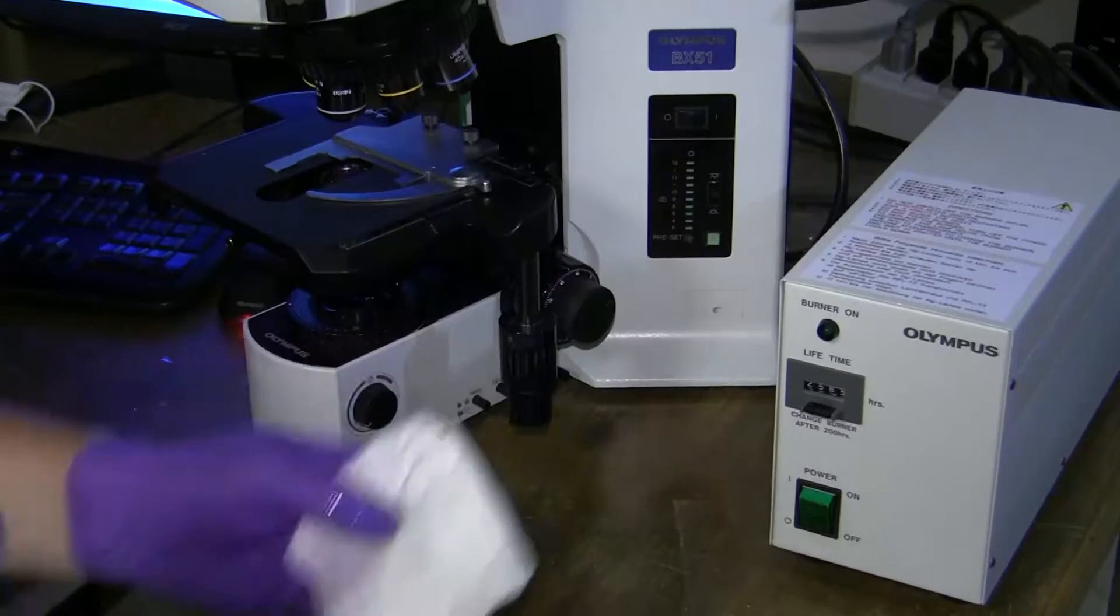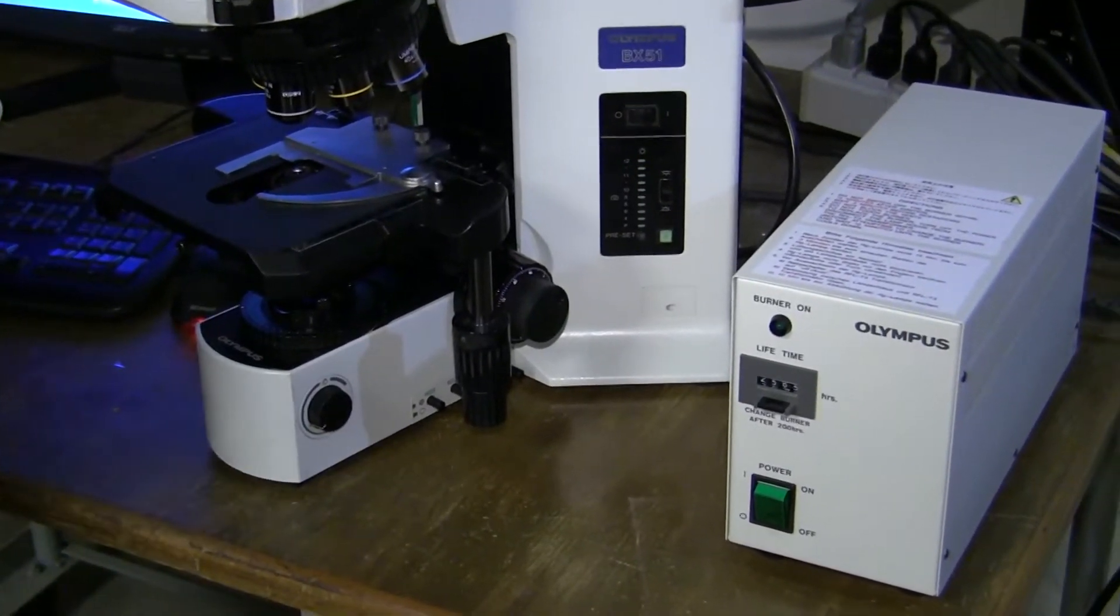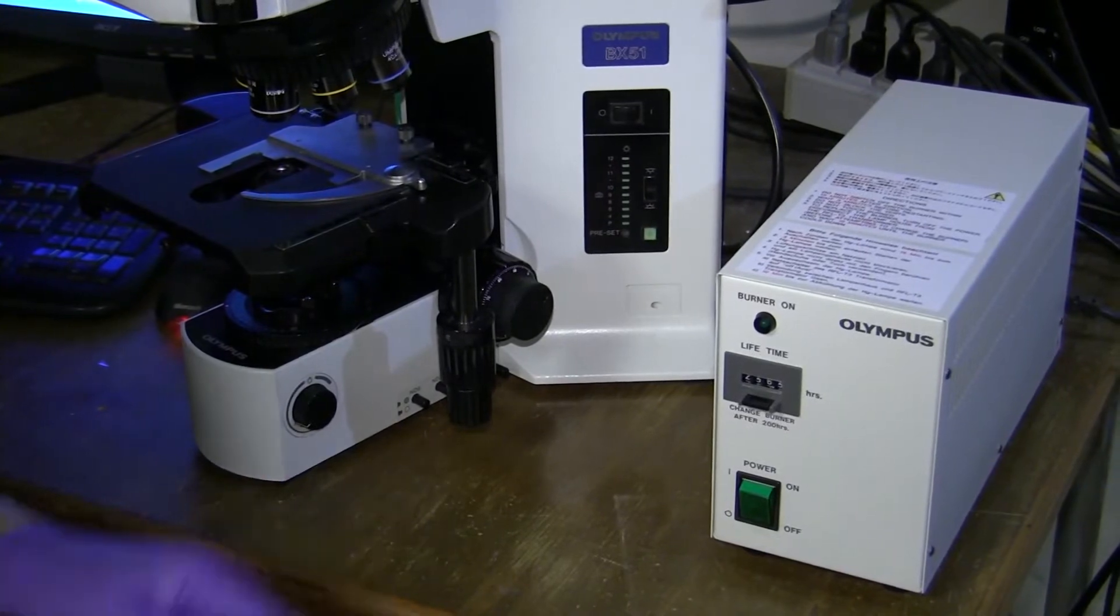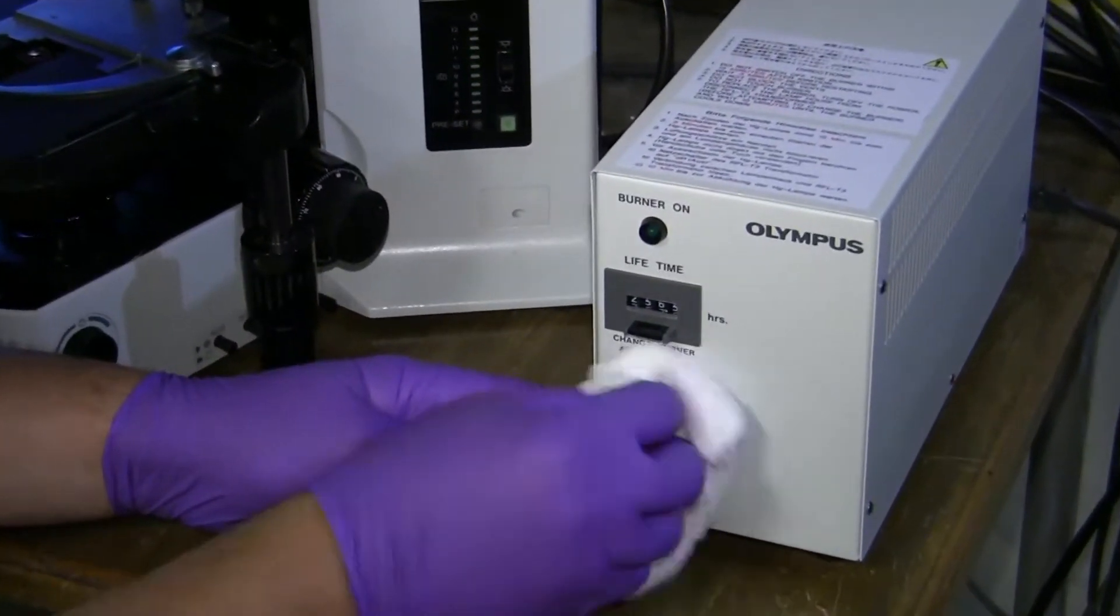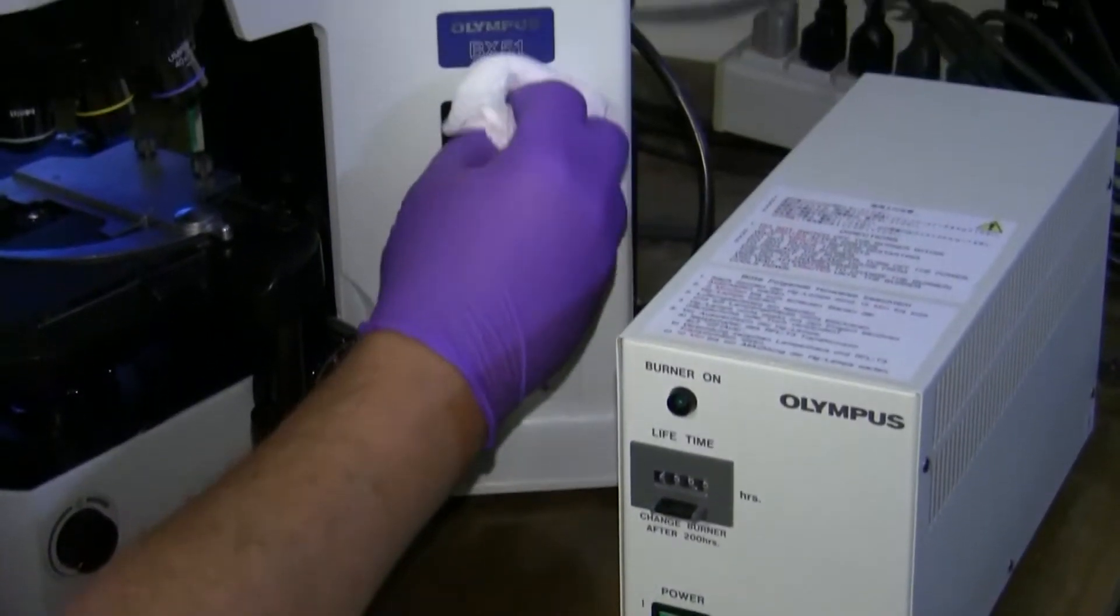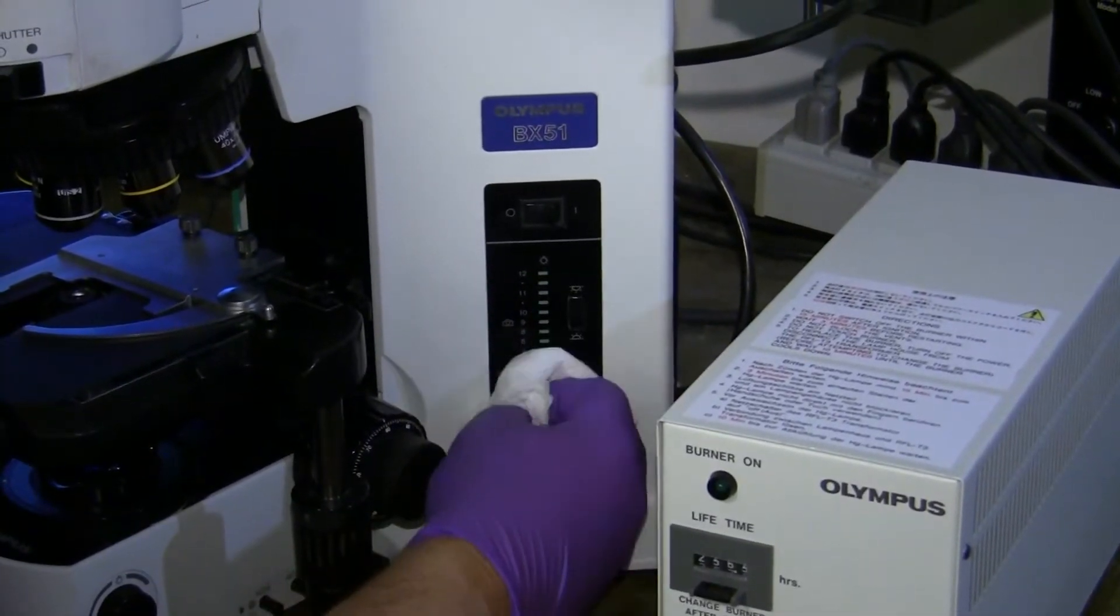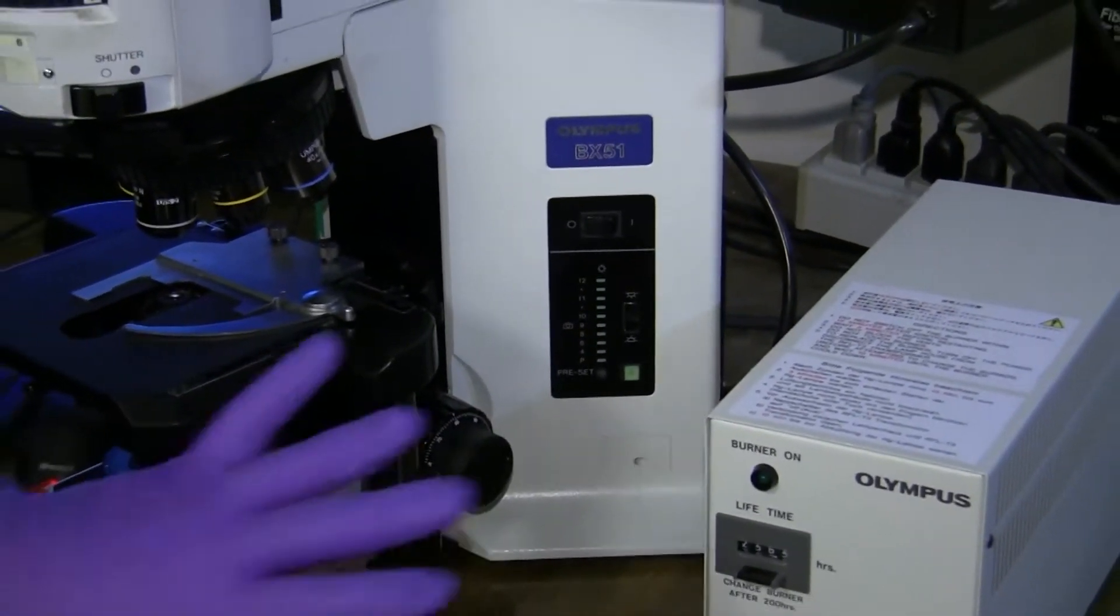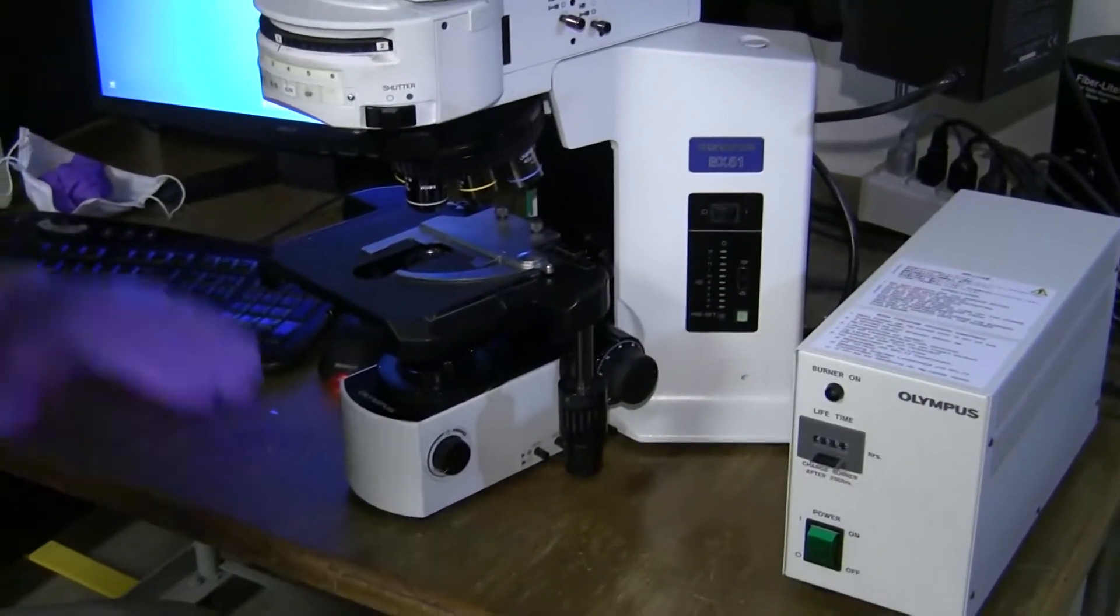And now we want to start first with the power knobs. So we have a power knob on our external power supply. So just wipe this up. Then do the power supply on the microscope and all this area which gets touched a lot. So now our power supply is done and we want to start at the bottom of the instrument and go upwards.